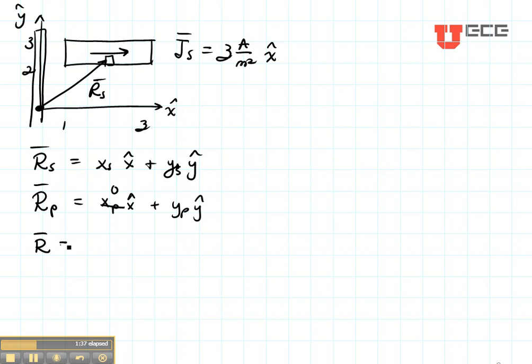Then I'm going to find R which is the vector from the source to the point where I want to find my field. Right here would be a picture of RSP. That is always equal to RP minus RS which is YP.